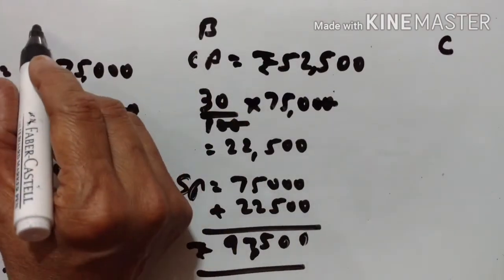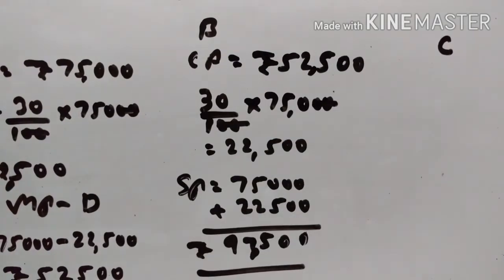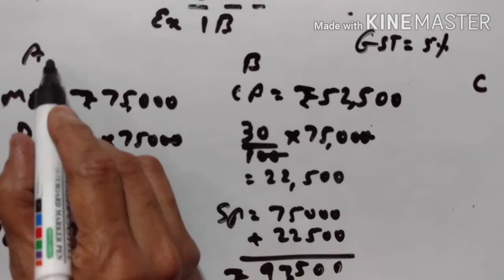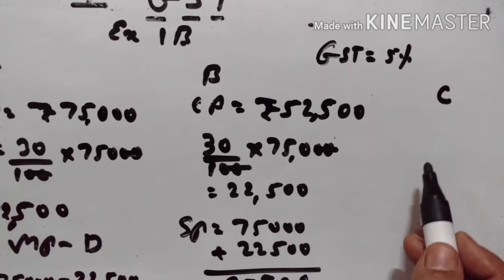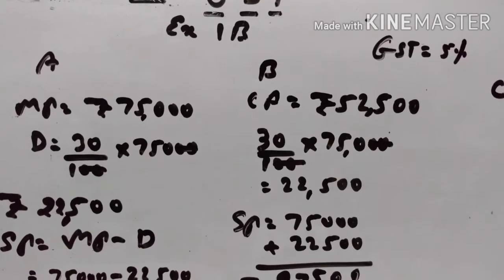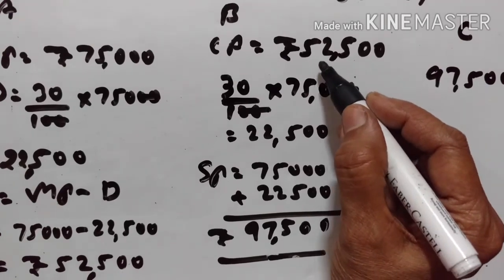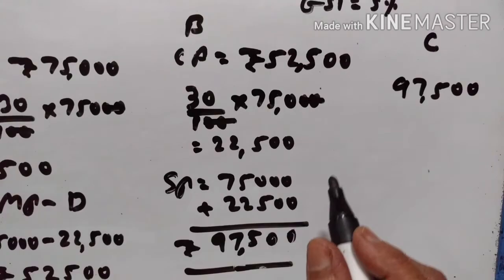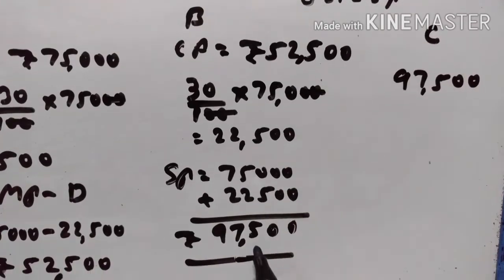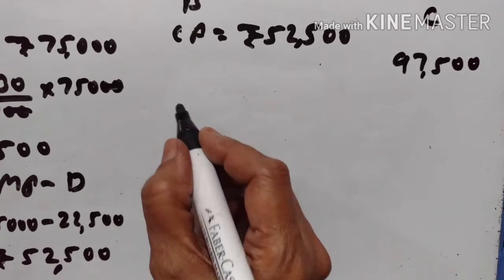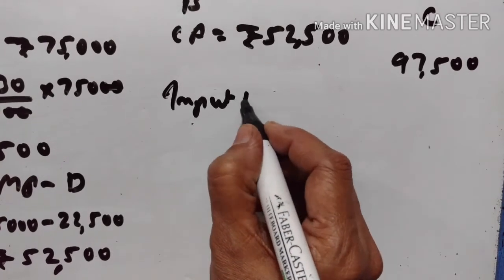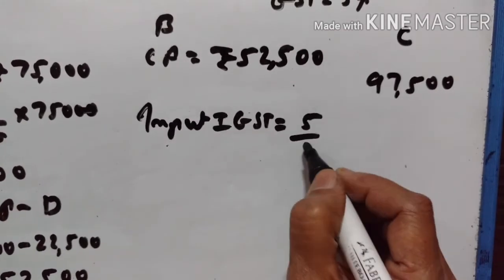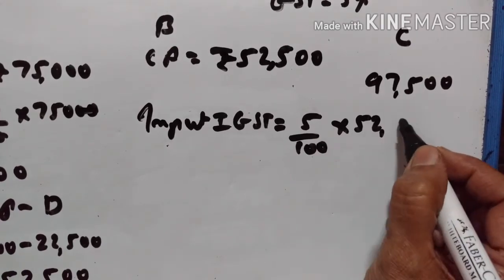From A to B is Delhi to Punjab, and Punjab to Delhi — this is interstate. Rate of GST is 5%. B bought the TV set for Rs.52,500 and sold it for Rs.97,500. We have to calculate input IGST and output IGST. Input IGST is equal to 5% of Rs.52,500.